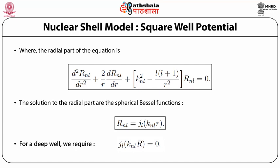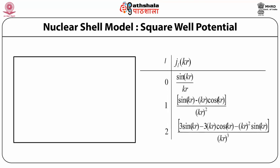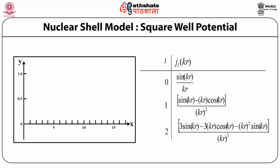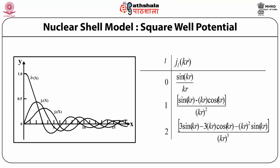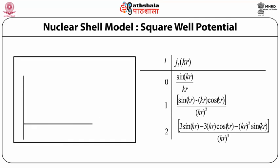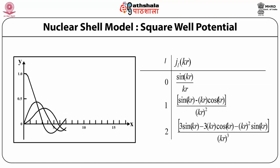For a deep well, we require j_l(k_nl · R) = 0. This is the boundary condition when we assume the nuclear potential to be deep enough. Here we have shown the behavior of the j_l wave function as a function of k_nl · r; its zeros are where the wave function cuts the x-axis. For j₀(x), the Bessel wave function cuts the axis at different places.